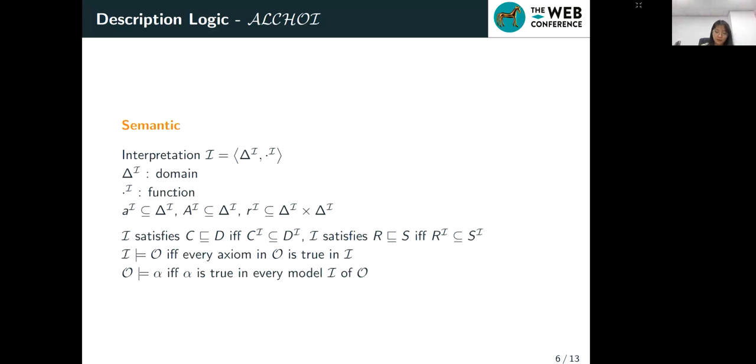And then the semantics of ALCHOI is defined in terms of interpretation I, where delta I denotes the domain of the interpretation and dot I denotes the interpretation function, which assigns to every nominal, every concept, and every role with a set. The interpretation function dot I can be inductively extended to concepts. We do not list these functions here.